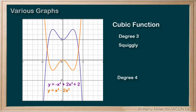And degree 4, which is called a quartic, gives us a w or an m shape.